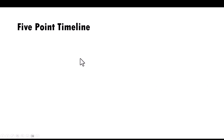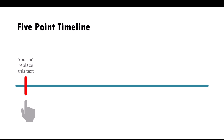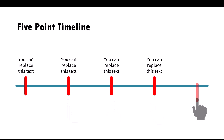Today I'll show you how to create a fun 5-point timeline PowerPoint animation. First we set the context by introducing a timeline and then we talk about the first point along the timeline, the second one, the third one, the fourth one and the fifth one.